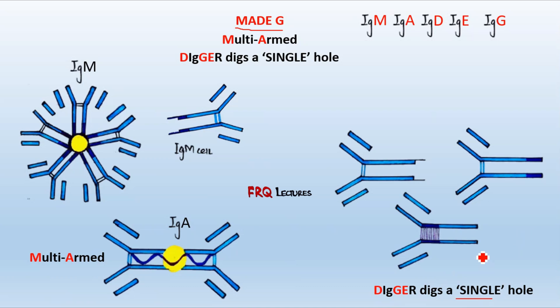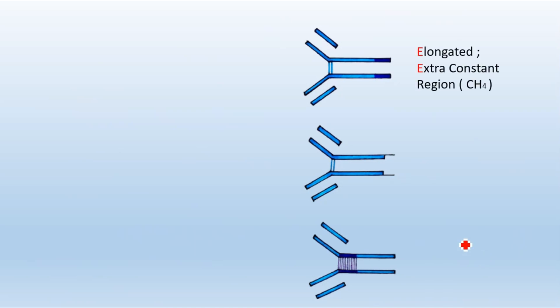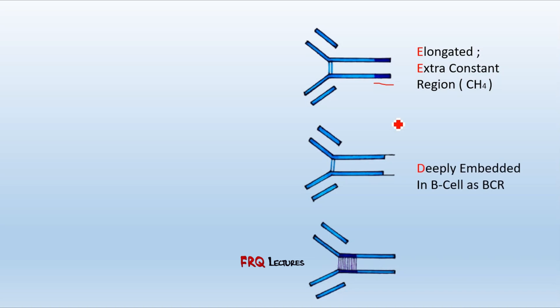The structure is quite clear. Now among IgD, IgG, and IgE — grouped on the right side of the screen — if we specifically talk about IgE, it has an elongated structure. Some antibodies have an extra constant region in their heavy chain. This IgE antibody has this extra constant region, which is why it is elongated. The next antibodies — IgD and IgG — don't have this extra constant region. I'll briefly touch on function here and cover functionality in detail in coming lectures.